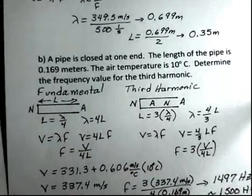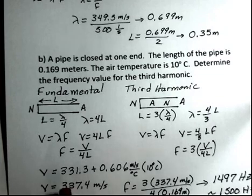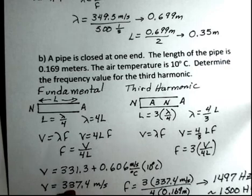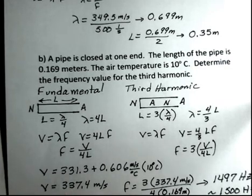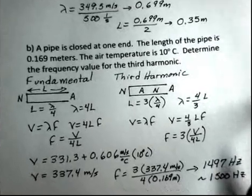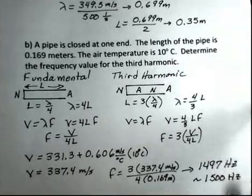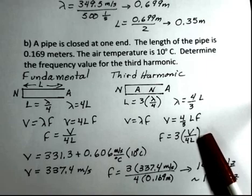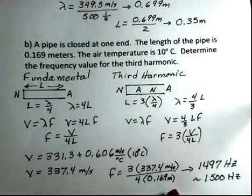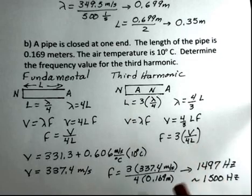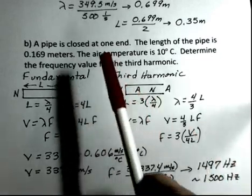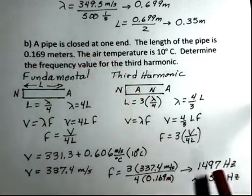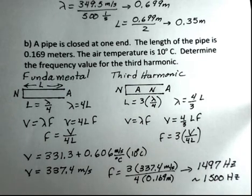Again, let's calculate the speed of sound. And for this now is a 10 degrees Celsius situation, and we come up with a slower speed of sound, 337.4 meters per second. Once we have that speed of sound, then we can do this calculation for the frequency. Three times the speed of sound divided by four divided by the length of the pipe that was given, 0.169 meters. And I came up with 1497 hertz. So about 1500 hertz would be the third harmonic frequency.